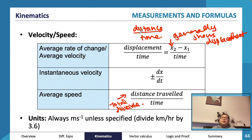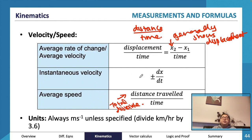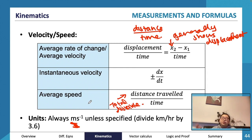For that previous example, the average velocity might be two divided by three seconds, whereas average speed would be 15 over three seconds — very different. Instantaneous velocity is your derivative, dx/dt. The conventional unit is meters per second; unless the question specifies otherwise, always use that.